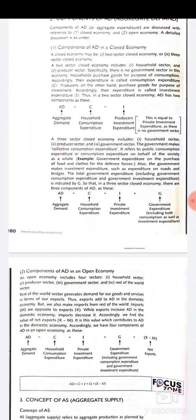Next are the components of aggregate demand in an open economy. In an open economy there are four sectors; the additional sector is the rest-of-world sector. This sector generates demand for domestic goods and services in the form of exports, so exports add to aggregate demand. However, the economy also makes imports, which are opposite to exports — exports increase aggregate demand while imports decrease it. So aggregate demand in an open economy equals household expenditure plus private investment expenditure plus government expenditure plus net exports, where net exports equal exports minus imports.